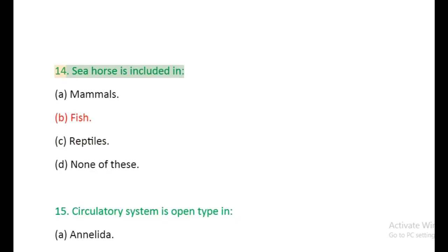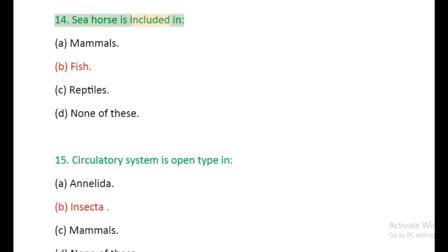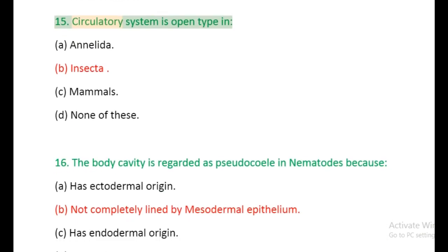Question 14: Seahorse is included in: (a) Mammals, (b) Fish, (c) Reptiles, (d) None of these. Question 15: Circulatory system is open type in: (a) Annelida, (b) Insecta, (c) Mammals, (d) None of these.